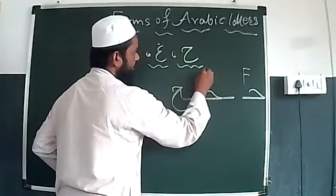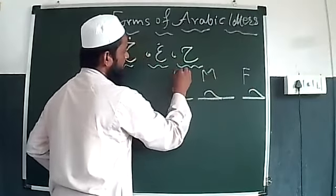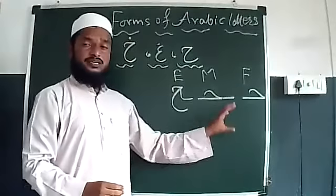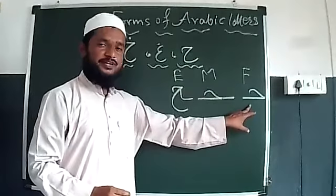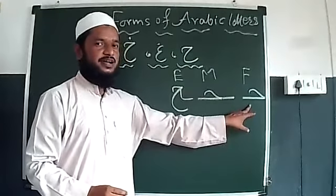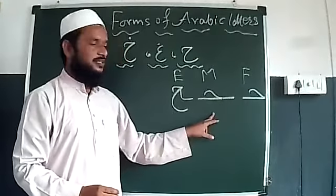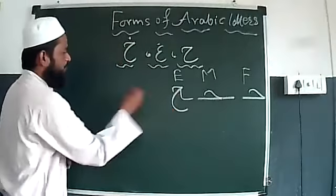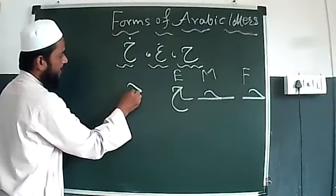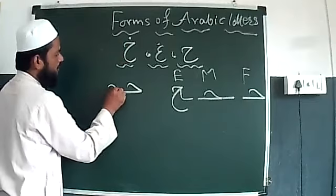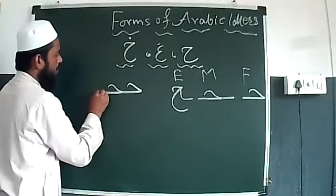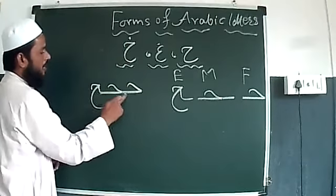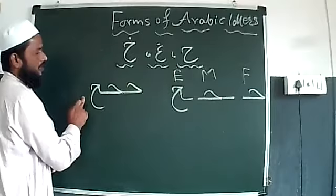First ka f, middle ka end, or end ka e. Yaani Quran mein kisi bhi lafz mein Haa first form mein istar aega, middle form mein istar aega, or end form mein istar aega. Jab teeno form ko hum ek saath milayenge to Haa ka first, Haa ka middle, or Haa ka end form — Haa, Haa, Haa.